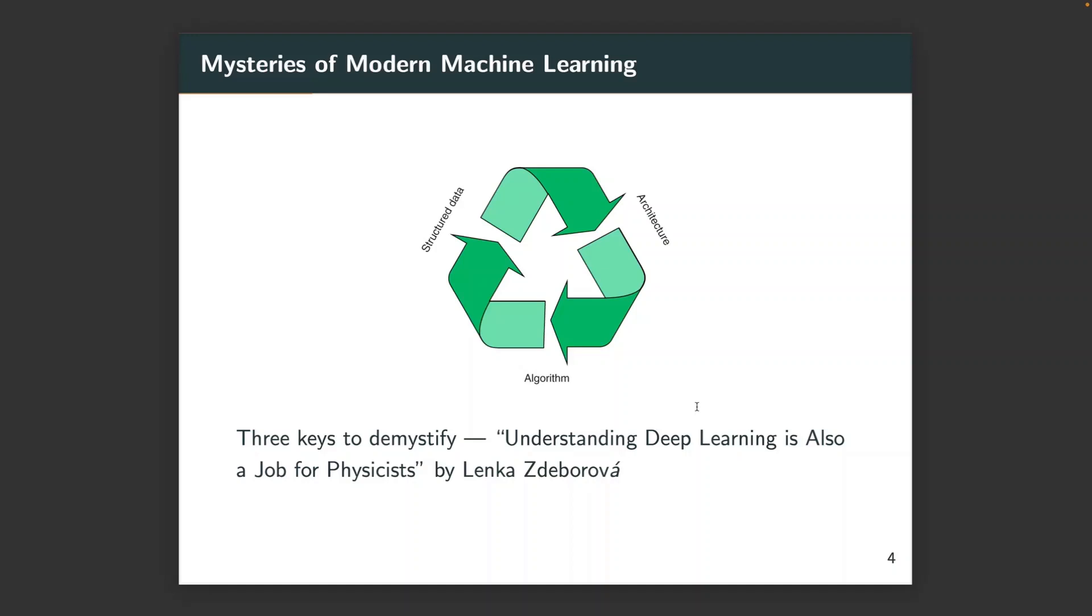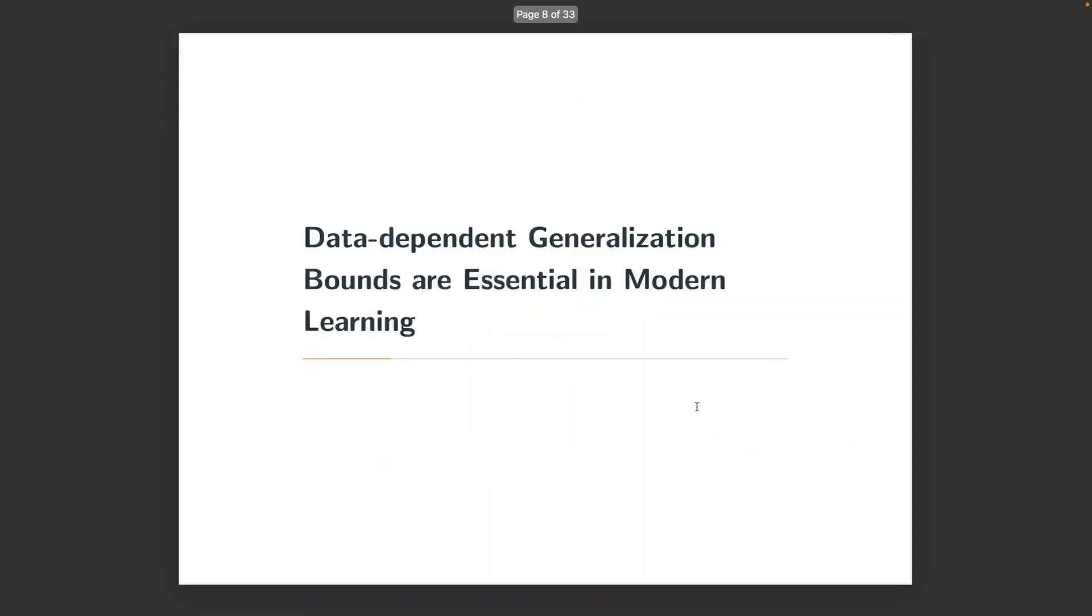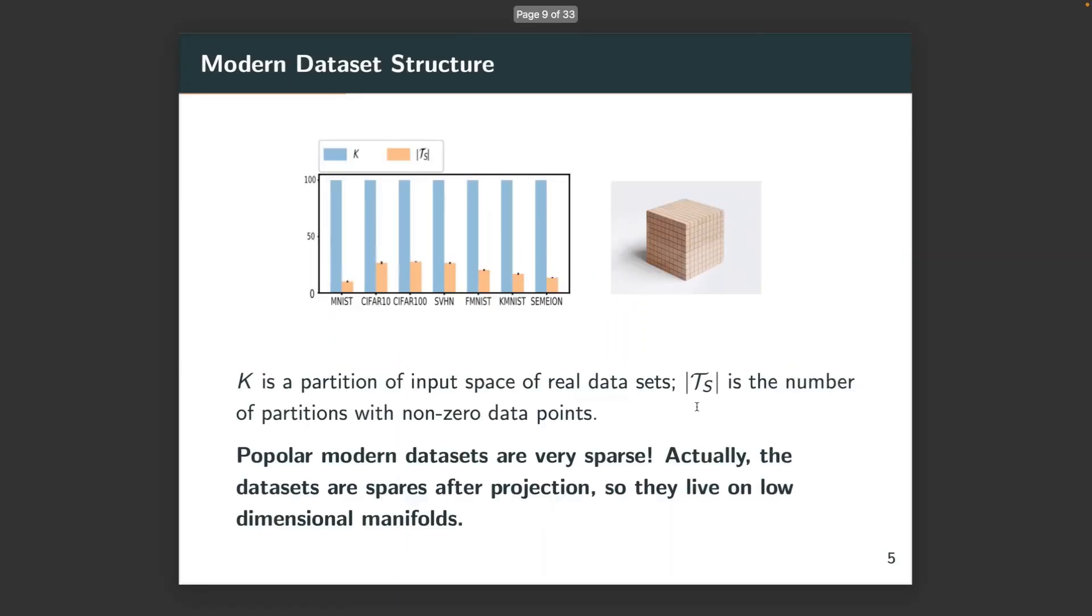In this talk, we will focus on the other proposed key, structured data, which means modern datasets such as MNIST or CIFAR-10. Those datasets are known to have special structures, which we will talk about in a moment. Now we are ready to deliver our main topic about how to derive more advanced data-dependent generalization bounds.